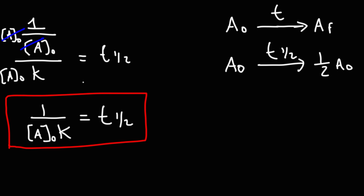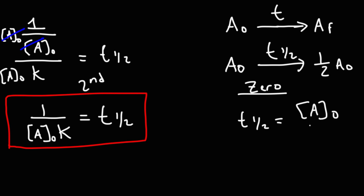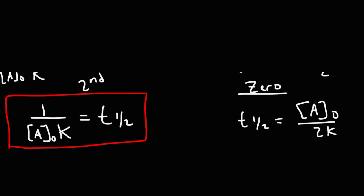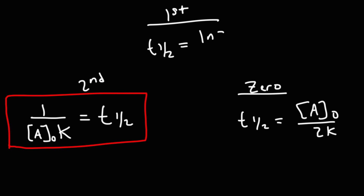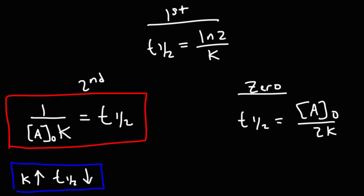Notice the difference between the reaction orders: the half-life for a zero-order reaction is A initial over 2K, for a first-order reaction it's LN(2) over K, and for a second-order reaction it's one over (A initial times K). In all cases, the half-life is inversely related to K — for all three rate orders, as the rate constant increases, the half-life will decrease, because K is always in the denominator.